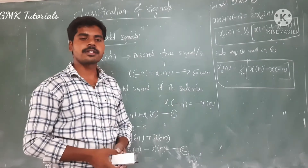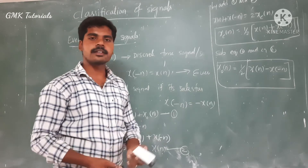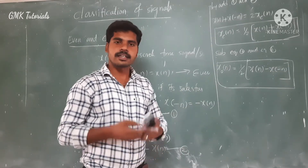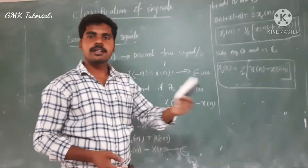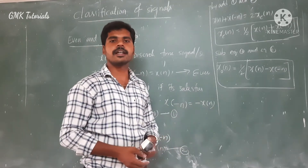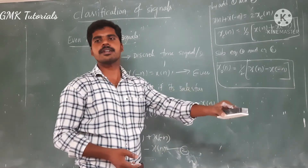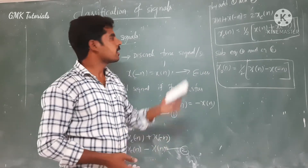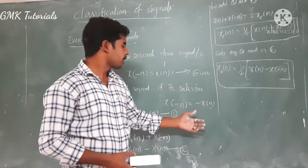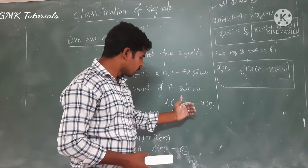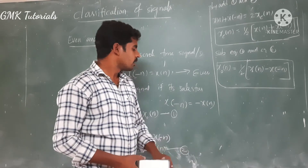So this is a brief introduction about the classification of signals. In summary, we have four types of signal classifications based on their properties. First is periodic and aperiodic signals. Second is energy and power signals — we define two formulas; if energy equals a finite value and power equals zero, the signal is an energy signal.